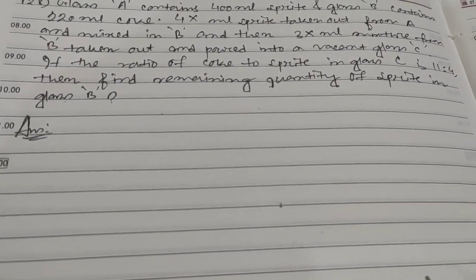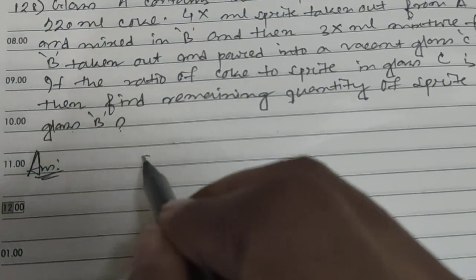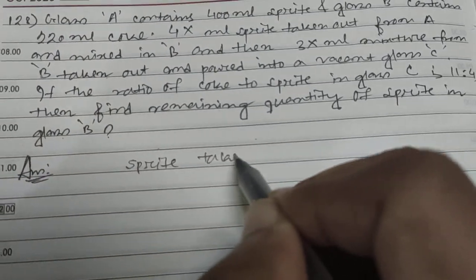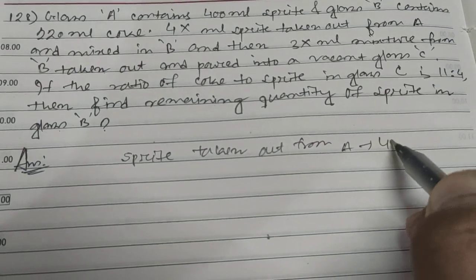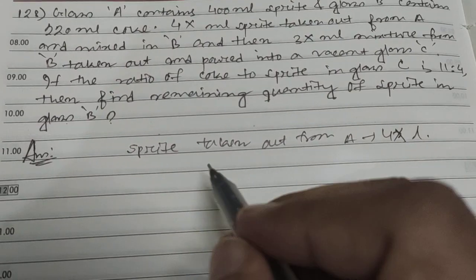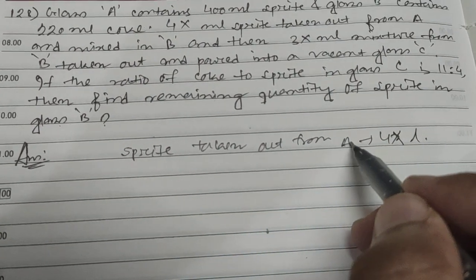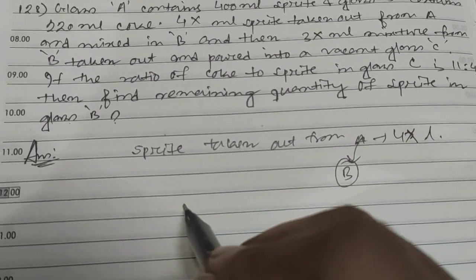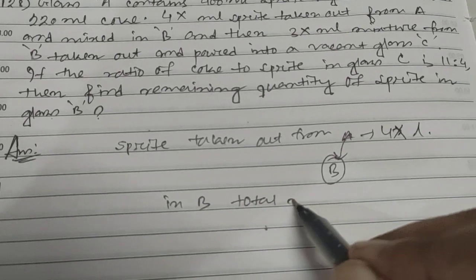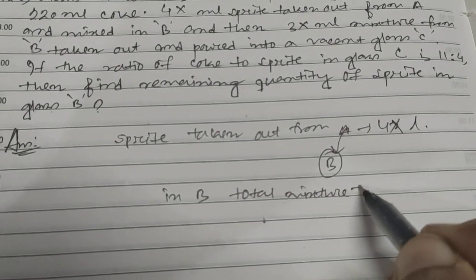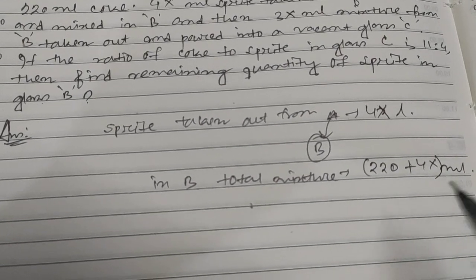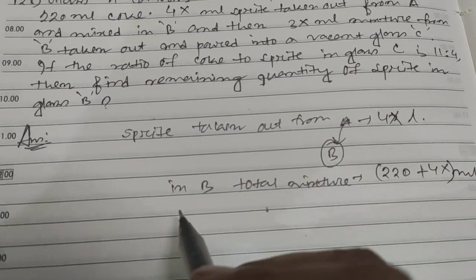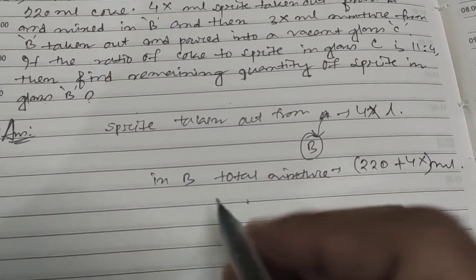So sprite taken out from A, how much? 4x liter. And it's poured into B. So in B, total mixture is 220 plus 4x milliliter.